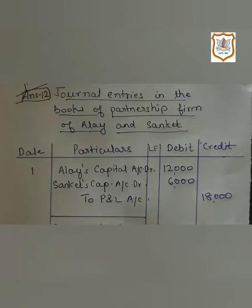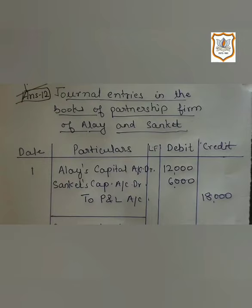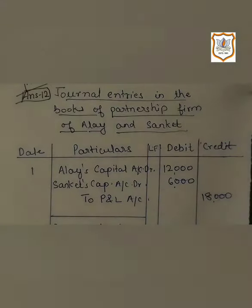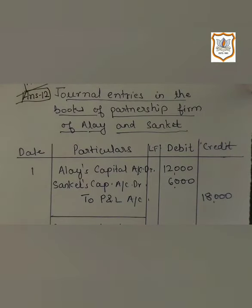Why do we distribute in the old profit sharing ratio? The reserves and accumulated profits and losses as on the date of change in profit sharing ratio have come into existence before the reconstitution of the firm. Therefore, the reserves and accumulated profits and losses are transferred to the partners' capital accounts or current accounts in their old profit sharing ratio. Now here are the journal entries.